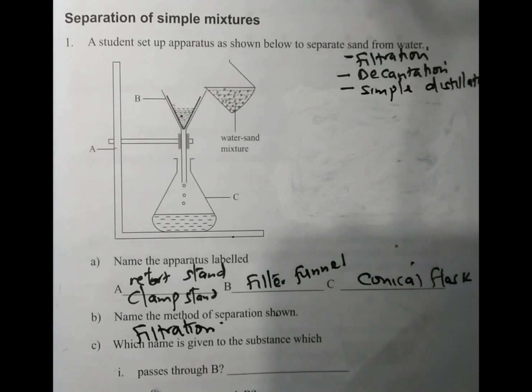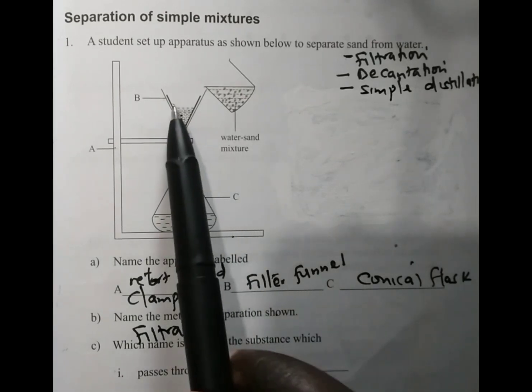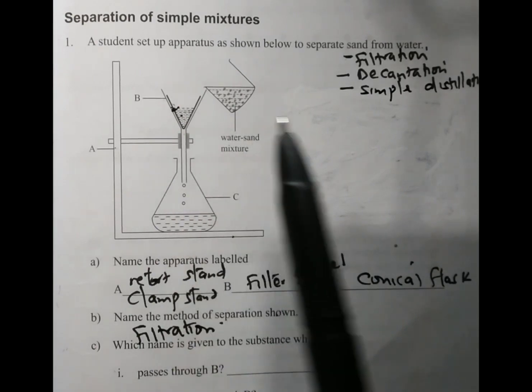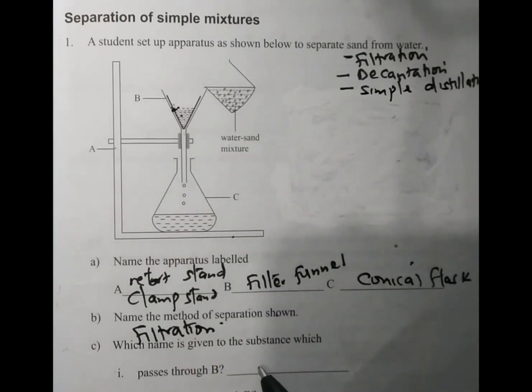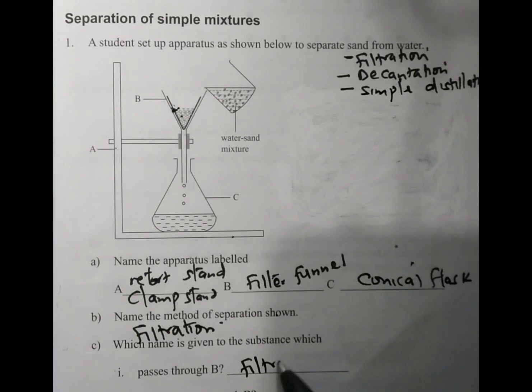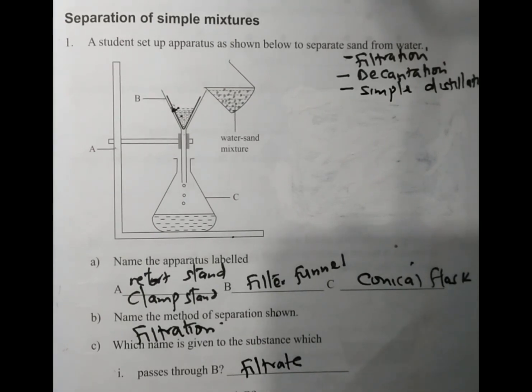We go to part C. Which name is given to the substance which passes through B? B is a filter funnel. The substance that goes through the filter paper we call it the filtrate. A filtrate is a liquid that goes through the filter paper.